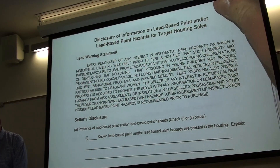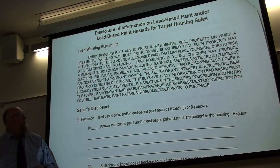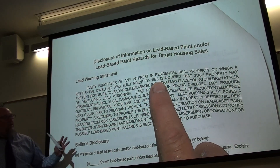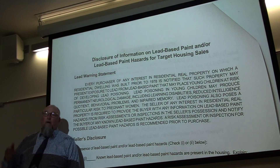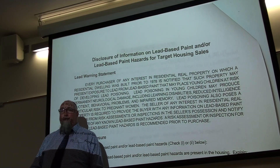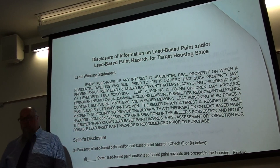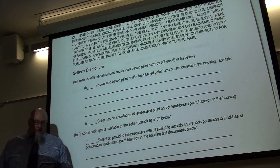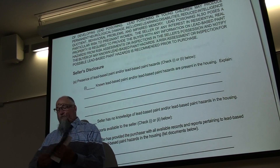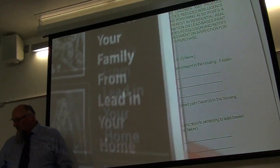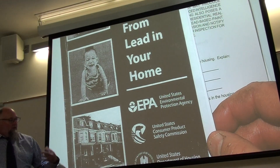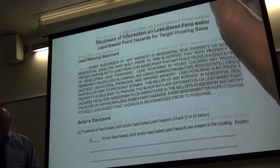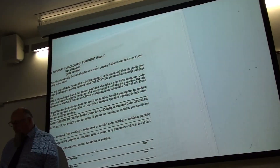Here's the lead-based paint disclosure form. If you are selling a property built prior to 1978, you must notify the buyer of the potential for lead paint — even if you don't know of any, you still have to declare that, and if you do know, you must disclose it. You also have to provide the EPA's booklet on lead-based paint, which is available online. Older homes almost invariably have lead-based paint that may require cleanup.